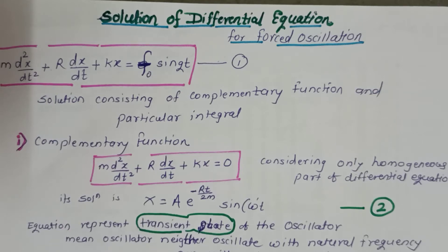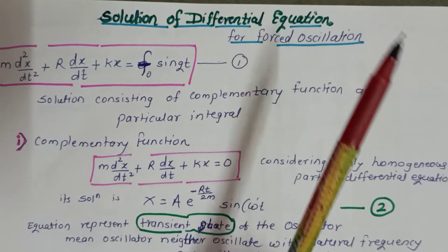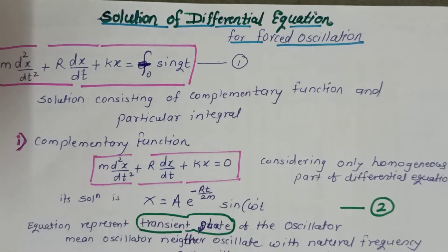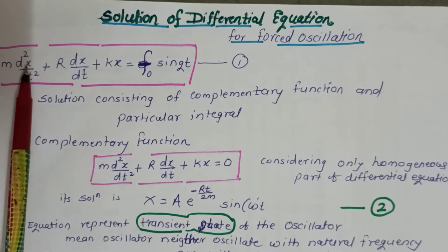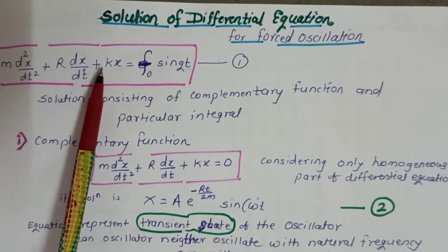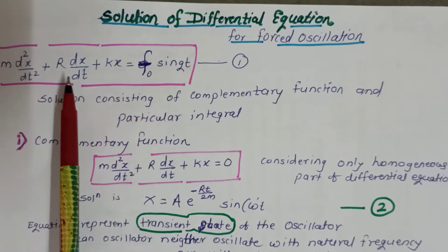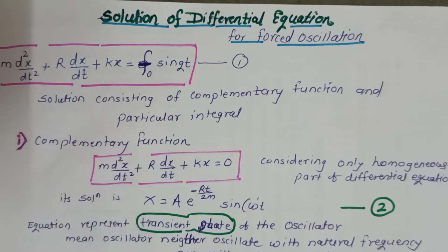Hi students, today we will discuss the solution of the differential equation for forced oscillation. In the previous class, we obtained the differential equation for forced oscillation, which is given as M·(d²x/dt²) + R·(dx/dt) + Kx = F₀ sin(Qt). This is the differential equation for forced oscillation.